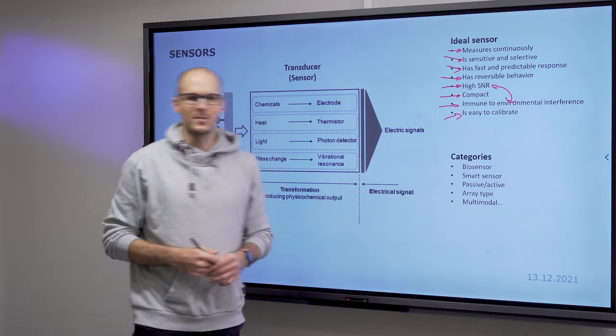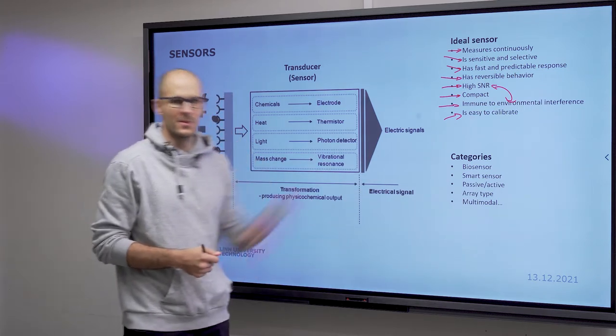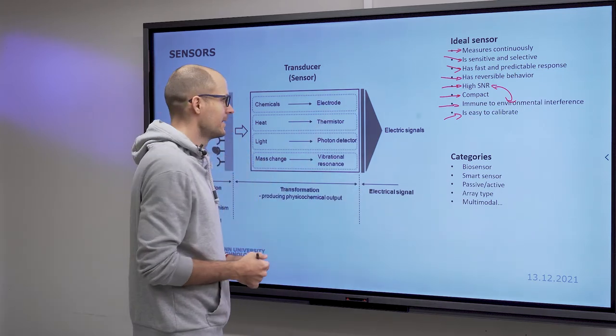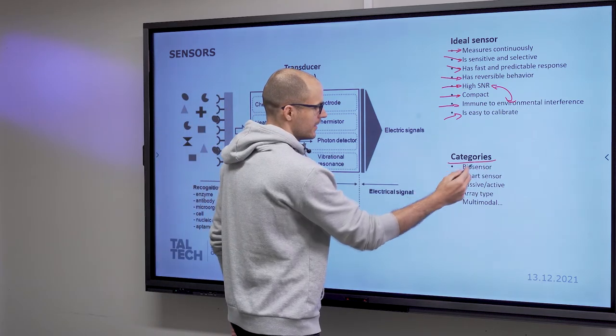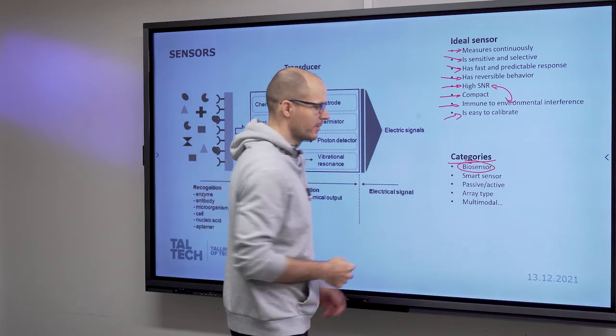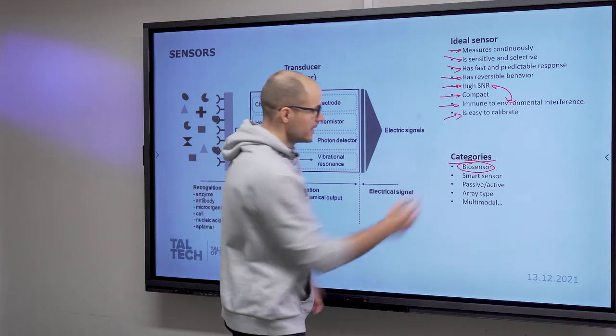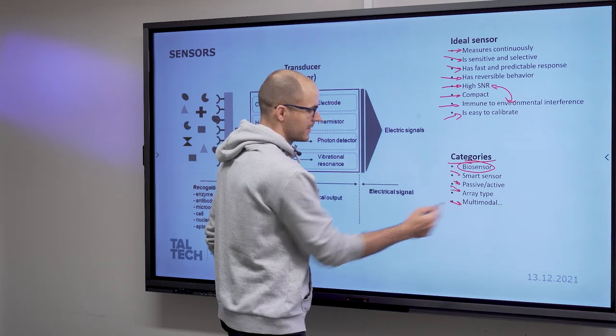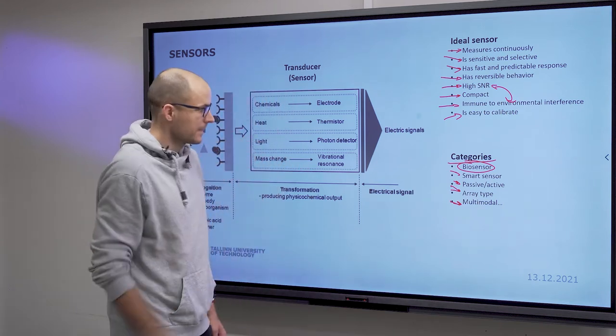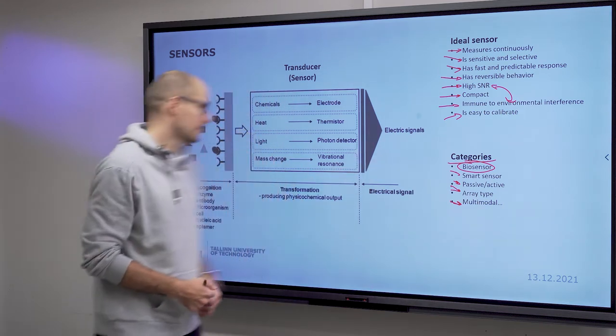Obviously not many of the sensors that we use meet all of these criteria at once, but this is what would be ideal. Categories: biosensors is what we will mostly deal with. There are smart sensors, passive or active, array type, multi-modal—these are the categories that sensors can fall into.